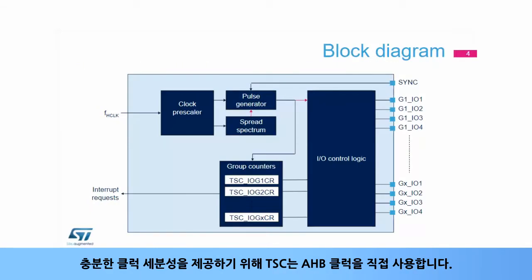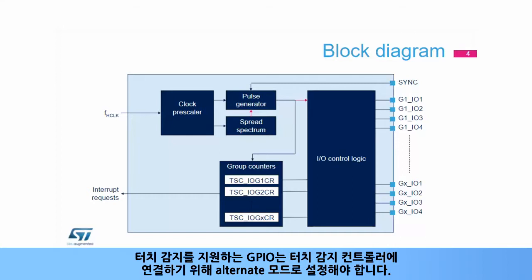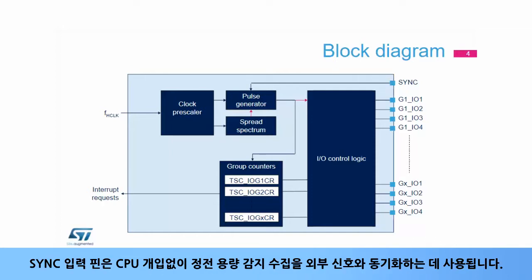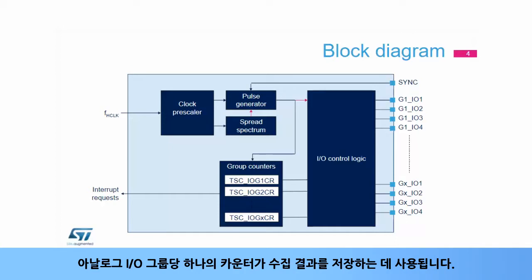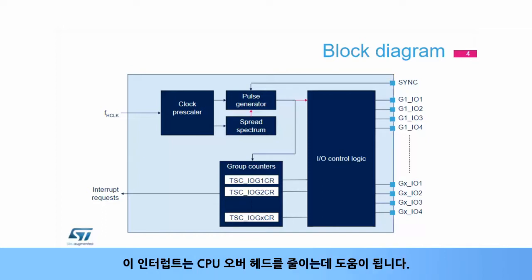To offer sufficient clock granularity, the TSC is directly clocked using the AHB clock. This clock is used by the spread spectrum block, while the clock feeding the pulse generator is reduced using a pre-scaler. GPIOs supporting touch sensing must be configured in alternate mode to connect them with the touch sensing controller. The sync input pin is used to synchronize the capacitive sensing acquisition with an external stimulus without CPU interaction. One counter per analog IO group stores the result of the acquisition. An interrupt can be generated upon end of acquisition or when an error is detected, helping limit CPU overhead.